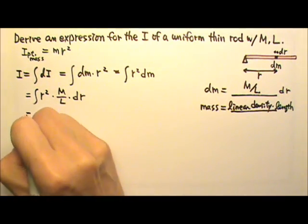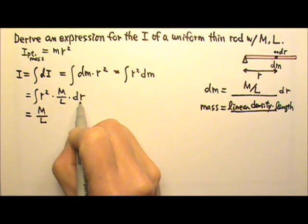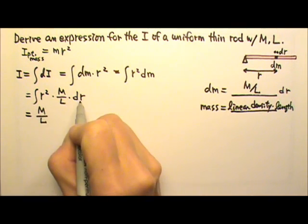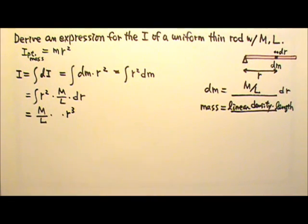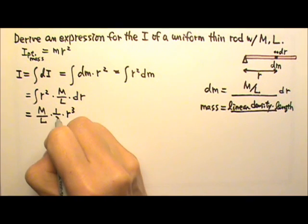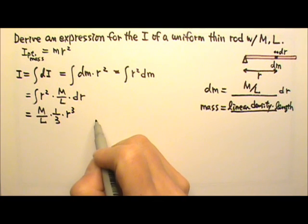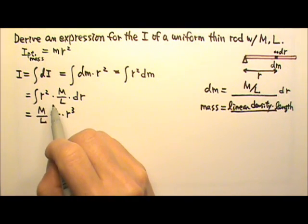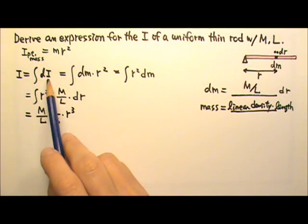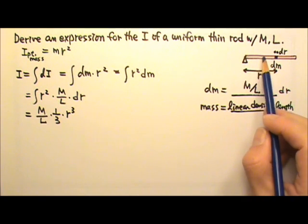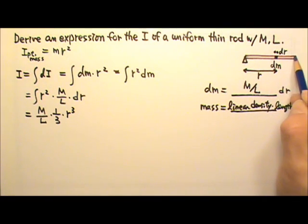Now we can take the M over L, which is a constant, out of the integral. And we're integrating r squared dr. So r squared is going to turn into r cubed. And what do we have to multiply this by? 1 over 3. Now we do not have to do the plus c over here because this is a definite integral. We are integrating from one end of the rod to another because we have to add the dI for every little bit of dm.